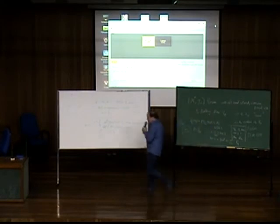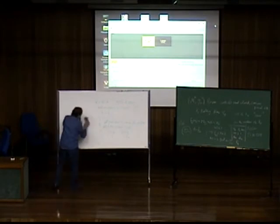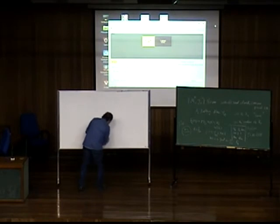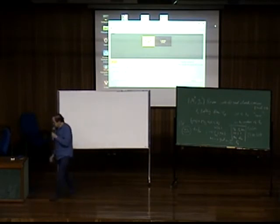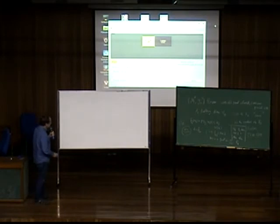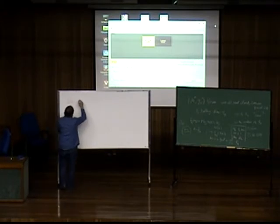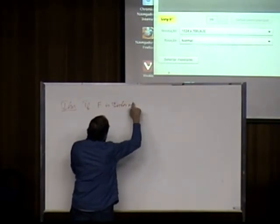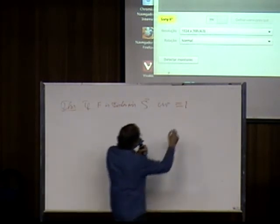The question is: what can one say about these metrics? What do they have in common? Can one say something about the geometry? One of the theorems I want to explain today is the following: if F is a Finsler metric on S² with flag curvature constant equal to 1, then the geodesic flow of F is determined by the length of the shortest closed geodesic.